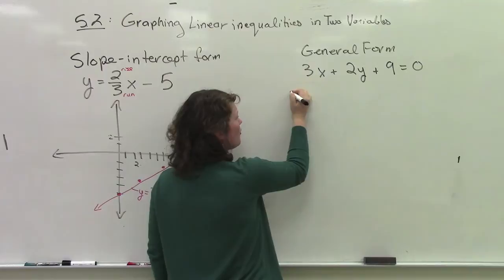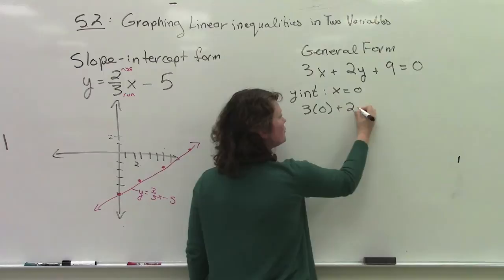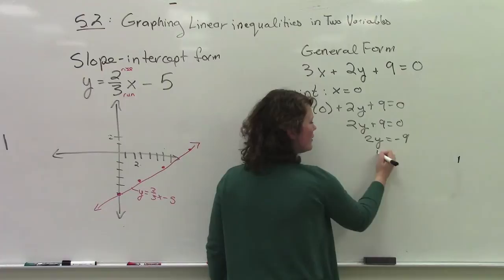So y intercept x equals 0. So instead of having an x here, I'm just going to sub 0. So 3 times 0 plus 2y plus 9 equals 0. This just turns to 0, so it becomes 2y plus 9 equals 0. 2y equals negative 9. Y equals negative 4.5.